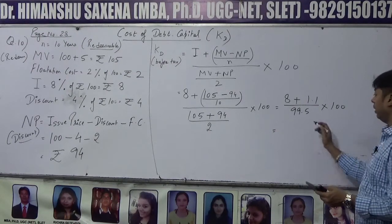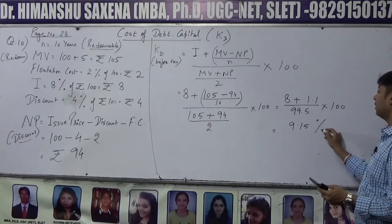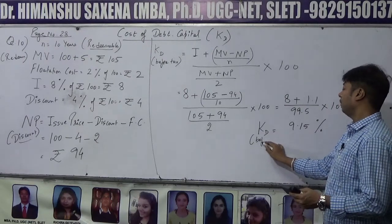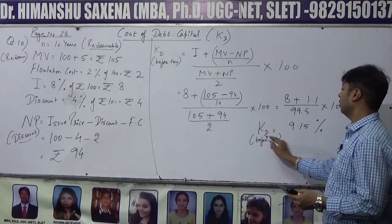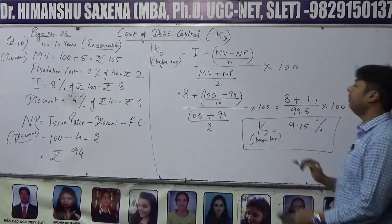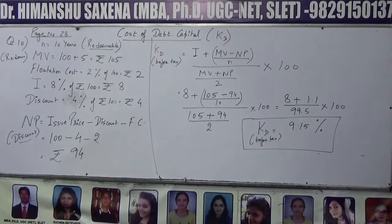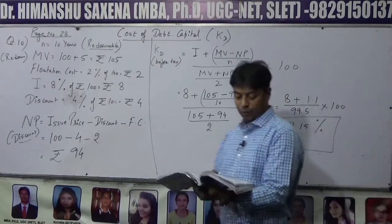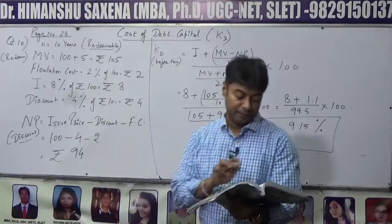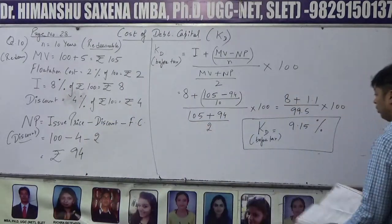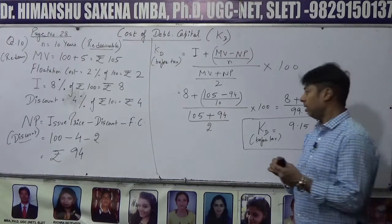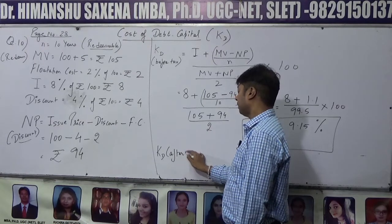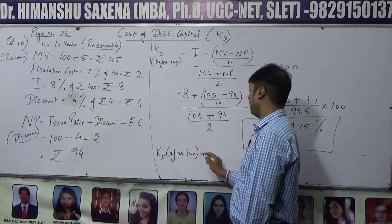This is going to be 9.15%. तो हमारे पास Kd आई — before tax वो है 9.15%. Note कर लीजिए और अपने answer को verify कर लीजिए। Kd before tax = 9.15%. Last line में लिखा है Kd after tax भी निकालना है।